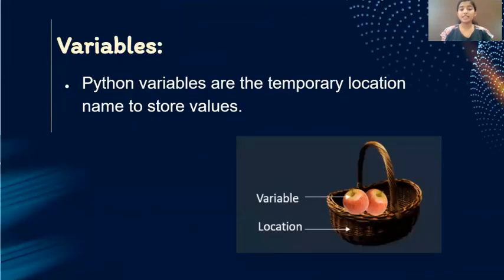First let us know what is a variable. Python variables are temporary locations named to store values. Can you see here there is a basket and the basket contains apple. This basket is the location where the variable, here it is apple, is being stored. It is just for temporary time.